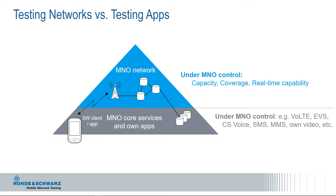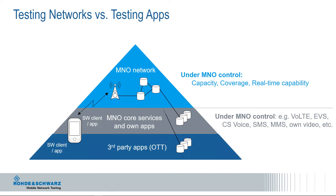The next layer shows the MNO core services and own applications like Voice and VoLTE, for example. You see the IMS, SIP, and voice servers connected to the core network, and there is always a software client on the phone. These are all under the control of the operator — here we are looking for application tests. The last layer shows third-party over-the-top services, where a software client on the phone connects to an application server somewhere in the internet via the mobile network. This is not under the control of the MNO, and again, application tests will check the performance.